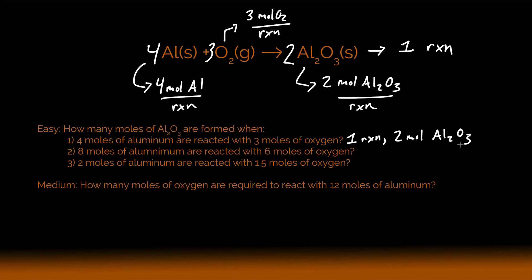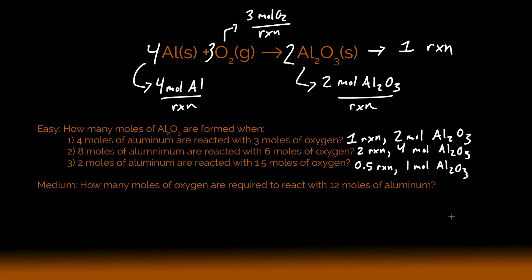For problem two, I took the amounts from problem one and doubled them. This gives me the ability to run two reactions, which produces double the output — four moles of aluminum oxide. For problem three, I had half the amount from problem one, so I can run 0.5 reactions, meaning I get half the output of one balanced chemical reaction: one mole of aluminum oxide. This only works this way because I intentionally made perfect ratios between my aluminum and my oxygen.